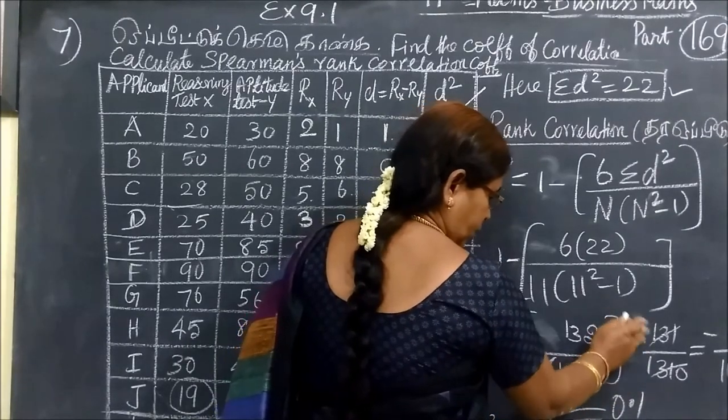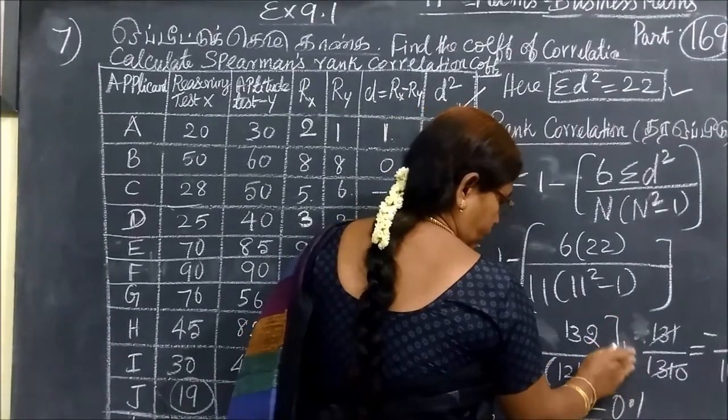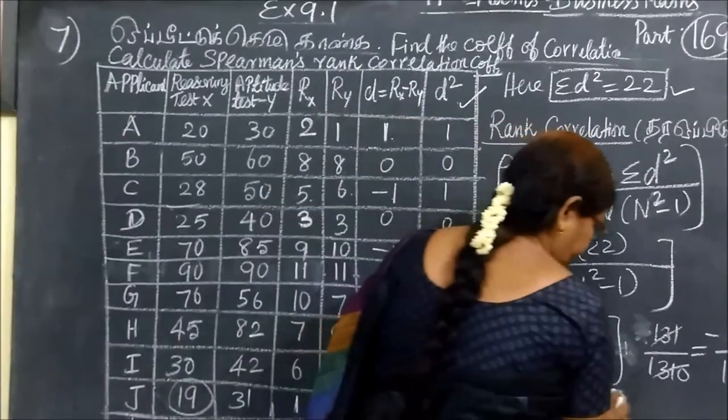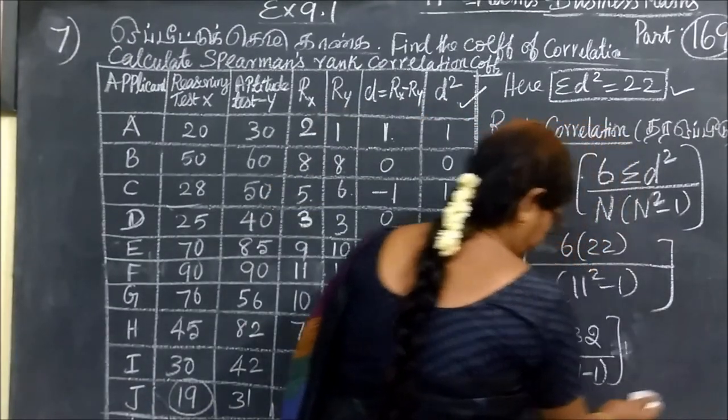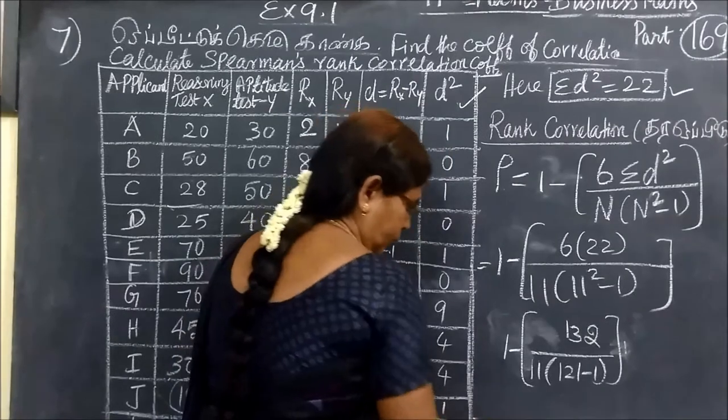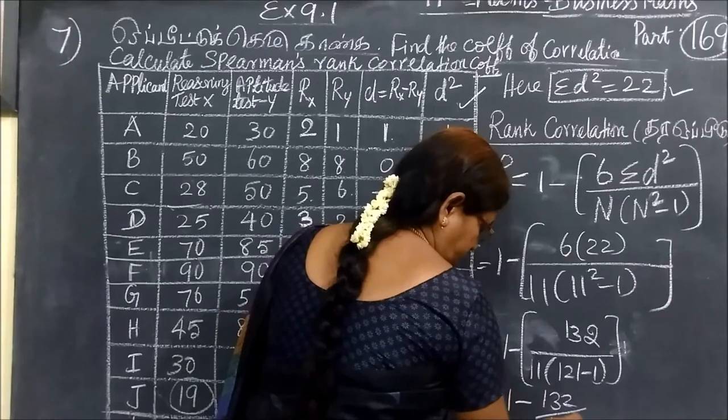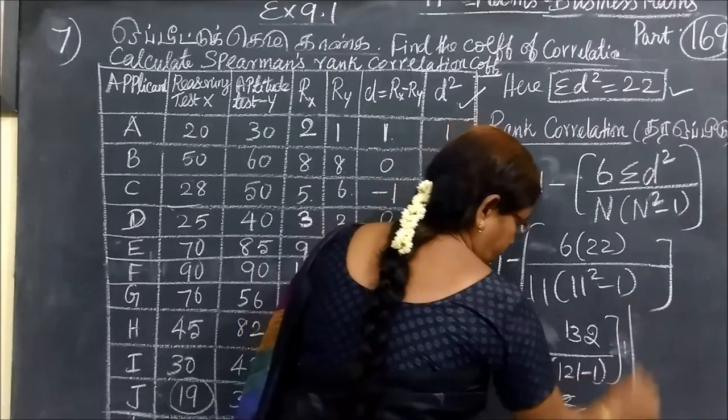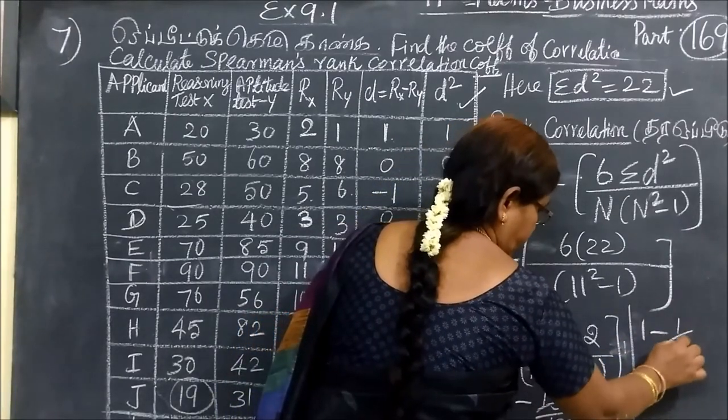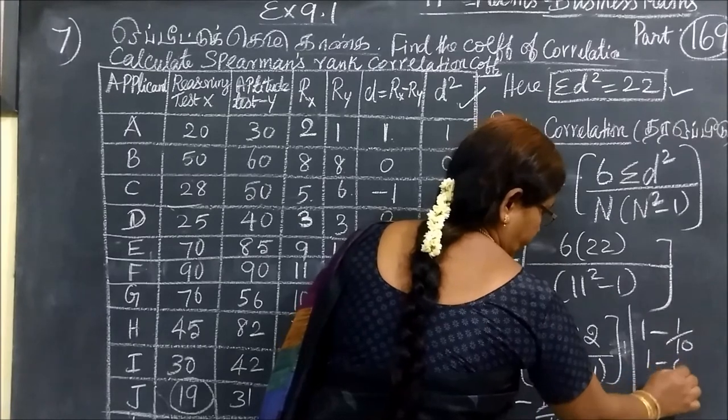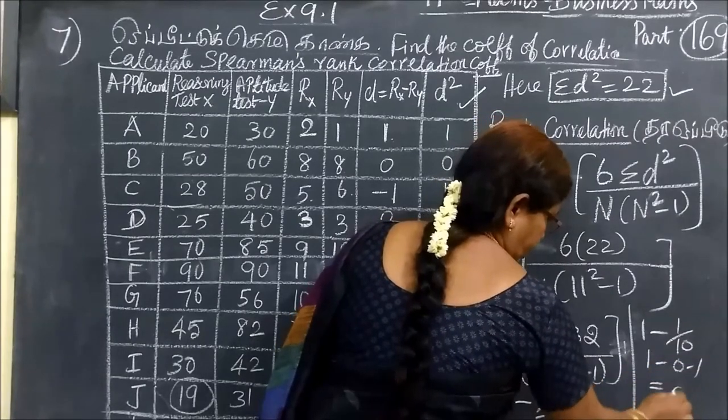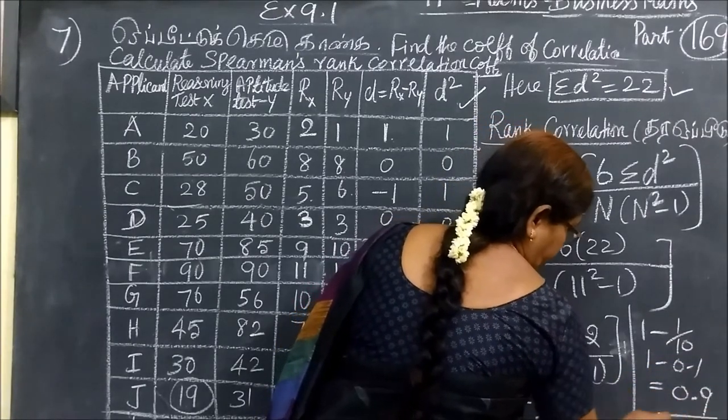So here you can write 1 minus 132 by 1320. So this is equal to 1 minus 1 by 10. So 1 minus 0.1 equal to 0.9.